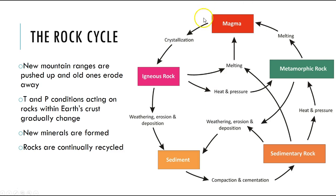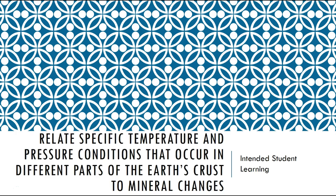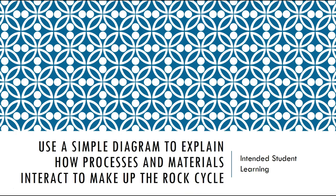Starting with magma, we can move into crystallization of an igneous rock. That igneous rock can then become a sedimentary rock, go back to being a magma, or become a metamorphic rock. A sedimentary rock can turn into magma or into a metamorphic rock. Rocks are always being recycled — one type of rock can turn into another, and that process branches in all areas. You should now be able to relate specific temperature and pressure conditions in different parts of the earth's crust to mineral changes and use a simple diagram to explain how processes and minerals interact to make up the rock cycle.